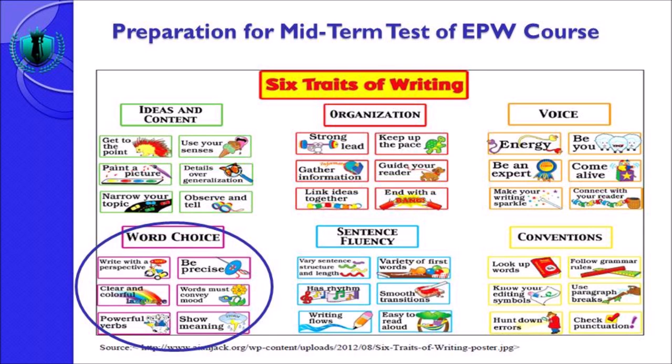Contoh clear and colorful: 'I went to the zoo yesterday. I met with my friends in the zoo, we walked together to see different animals.' Jadi kata 'the zoo' kita bisa kembangkan menjadi 'I went to the zoo, in that place I met with my friends.' Bisa divariasikan. Yang ketiga, words must convey mood — kosa kata yang harus menampilkan mood, apalagi ketika anda menulis genre naratif. Words must convey what is your mood, what is your emotion — you can choose specific words to show that.